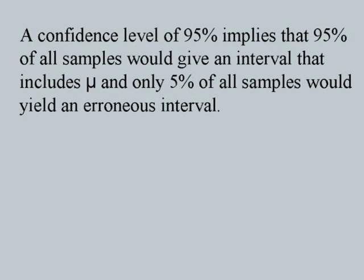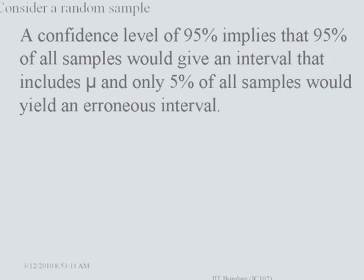There is a trade-off: if you want to increase the level of confidence, the width of the confidence interval is going to increase. A confidence level of 95% implies that 95% of all samples would give an interval that includes mu, the population mean, and only 5% of all samples would yield an interval that misses it.